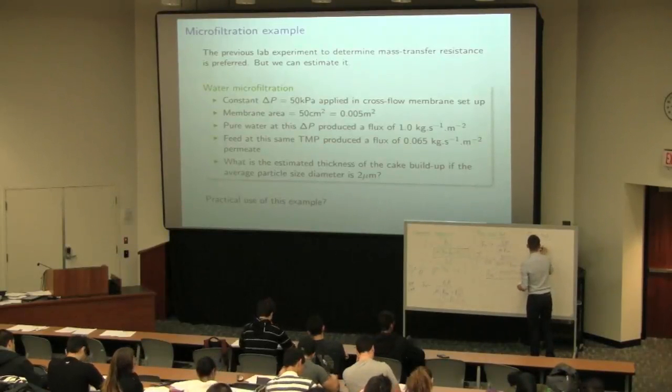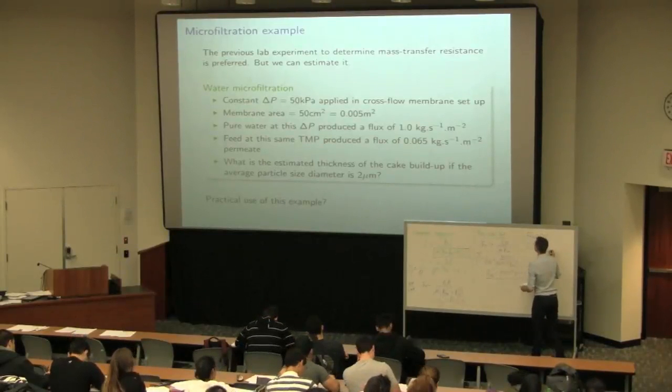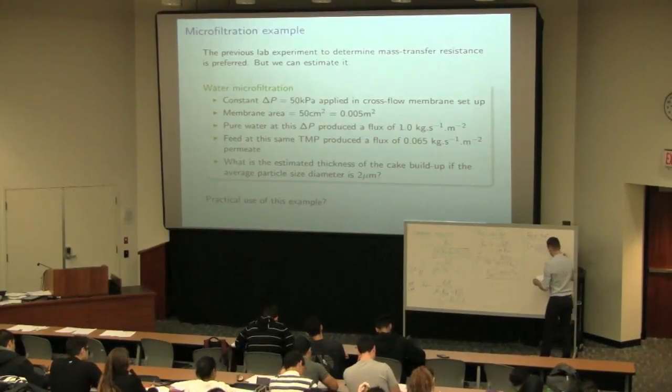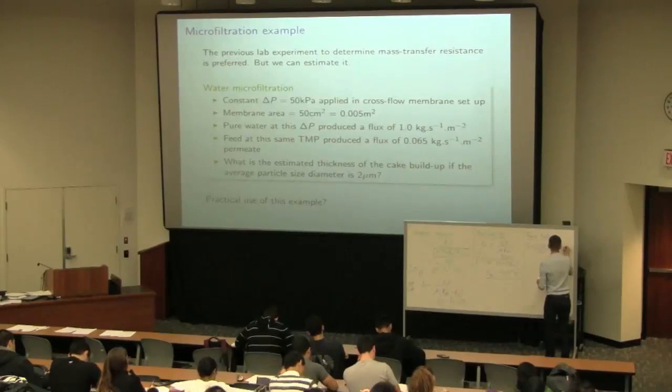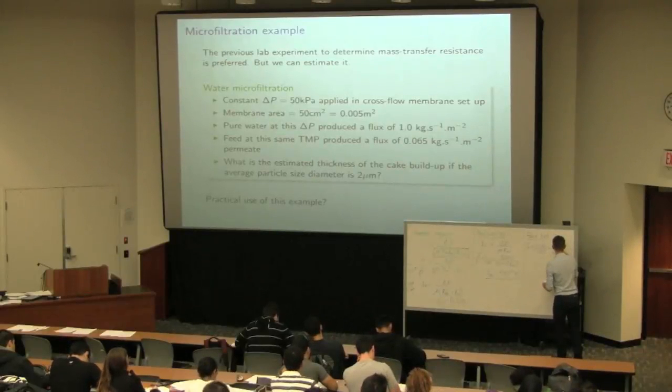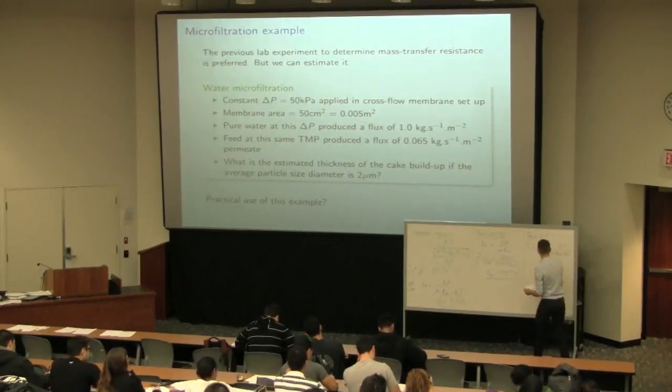It is 0.065 divided by 1,000 to get the permeate's flux. And that's equal to delta P divided by the viscosity, RMV, the membrane resistance plus the cake's resistance. So simplifying or rearranging for RCV.